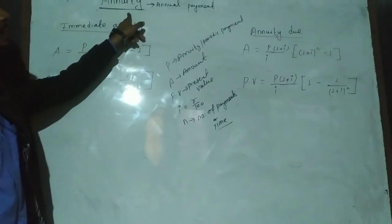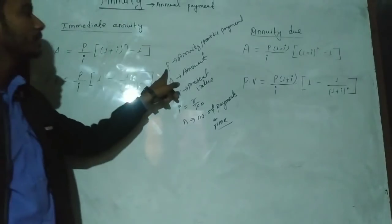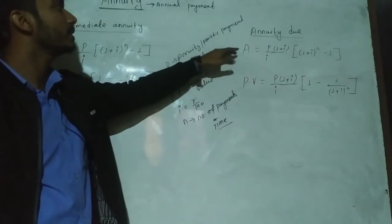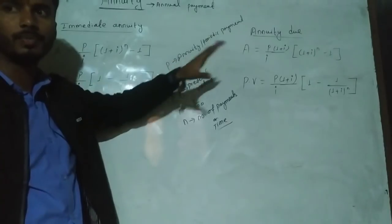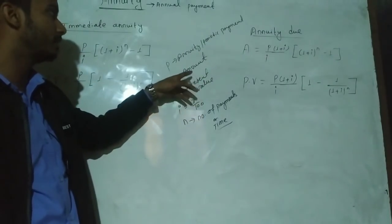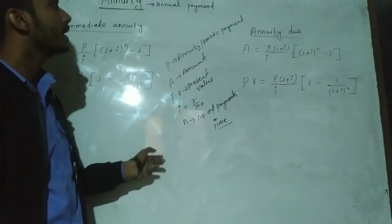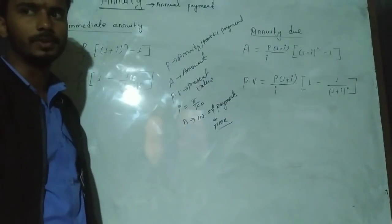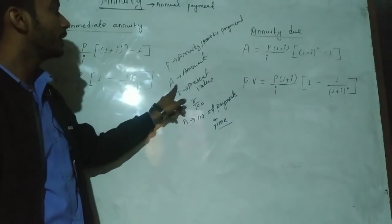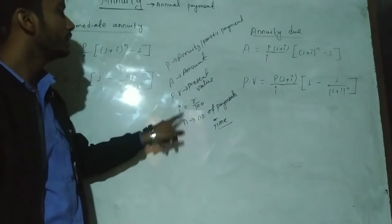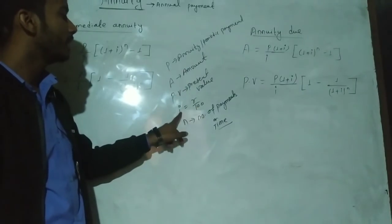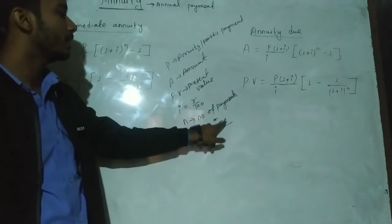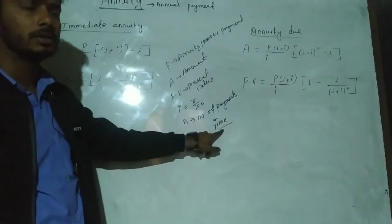Annuity is also called periodic payment. The annuity amount is called P. It is called P — periodic payment. In a fixed time interval, the periodic payment is called annuity. We can also identify the exact number of payments, N, and the amount of annuity, which gives us the present value. I is the rate. The number of payments is N.